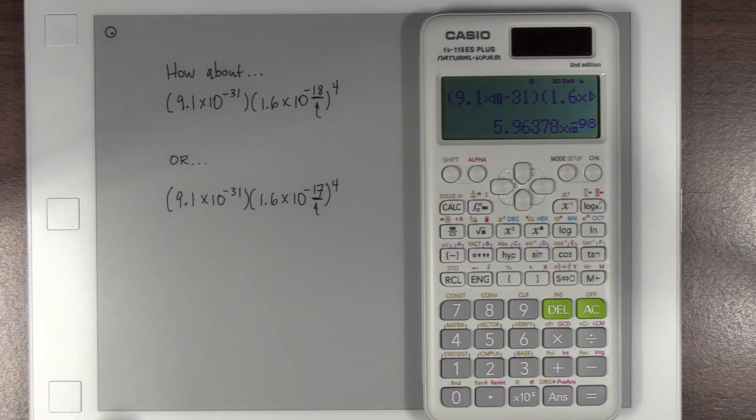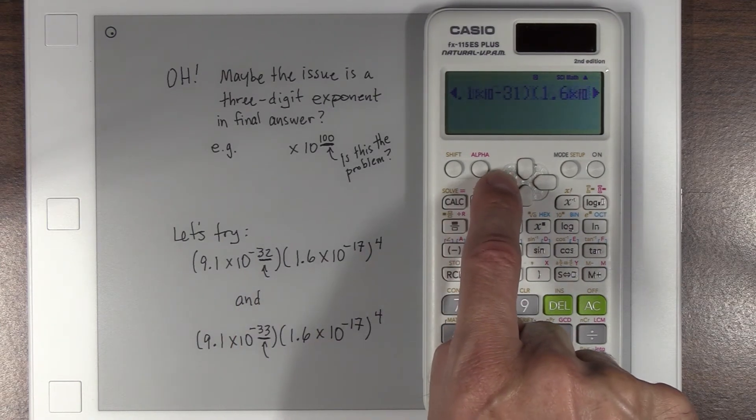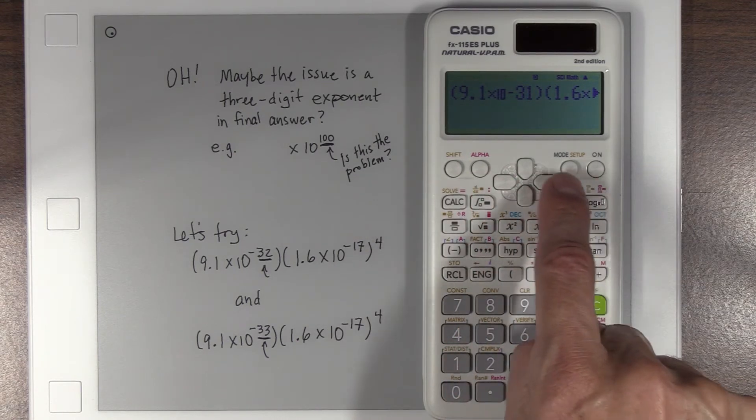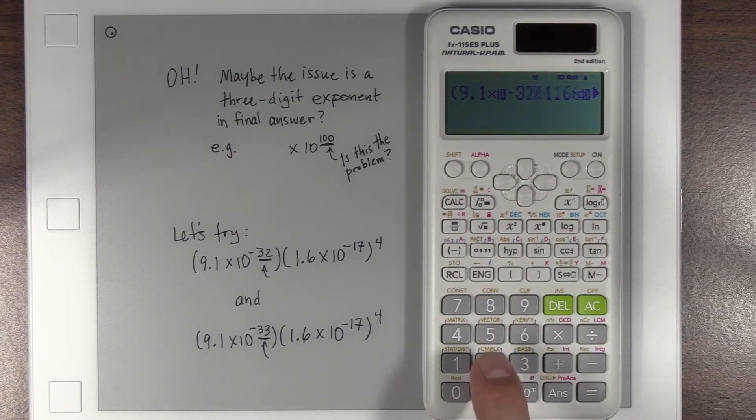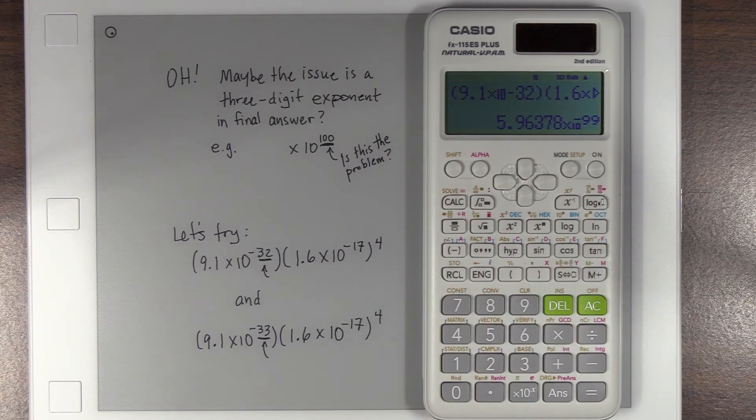It's times 10 to the negative 98th power, which is really close to going into triple-digit territory. So I started suspecting that was what was up. And then here, instead of times 10 to the negative 31 power, I said, let me bump it up to 32, negative 32 power, and see if that works. And it does, 5.96 and change, times 10 to the negative 99th. So we're still good.